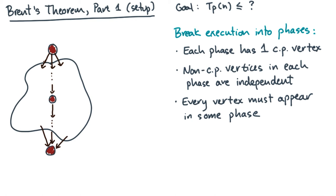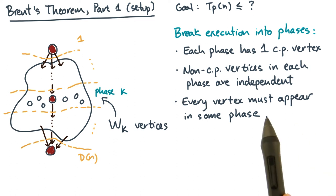Every phase k will have some number of vertices associated with it. Let's say that number is w_k, and this value w_k will include the critical path vertex.